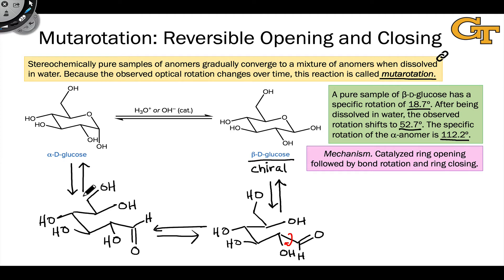All three of these steps are reversible, such that at equilibrium we end up with a mixture of the alpha and beta anomers. It's that 36% alpha-D-glucose and 64% beta-D-glucose mixture that we saw in the previous slide.